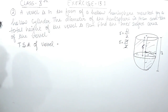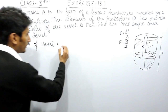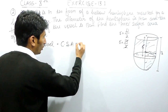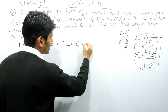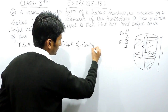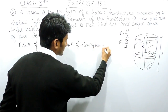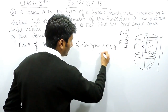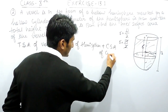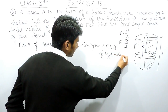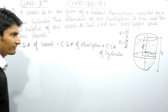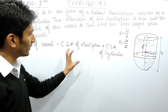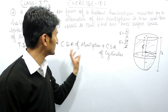So the total surface area of this vessel equals the curved surface area of the hemisphere plus the curved surface area of the cylinder. This is the surface which is visible to us.